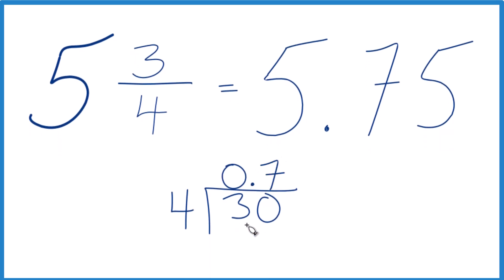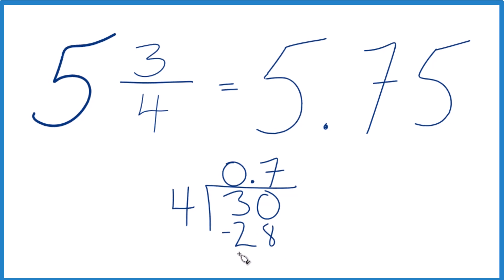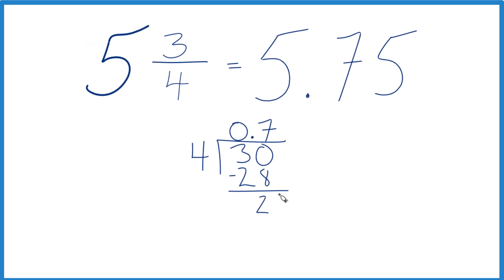Now 7, 7 times 4 is 28. Subtract, and we'll get 2. Let's call it 20 and move over 1. 5 times 4, that's 20. Subtract, no remainder.